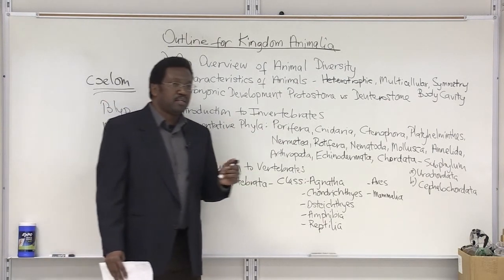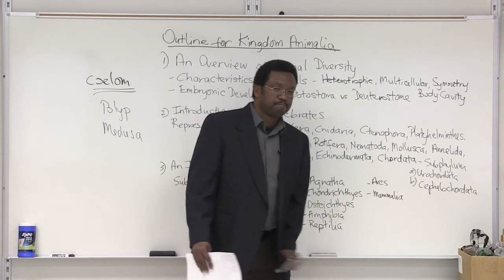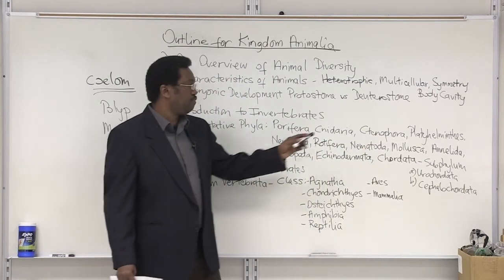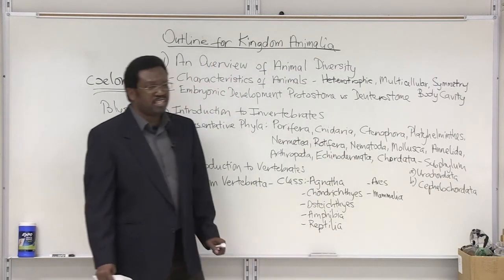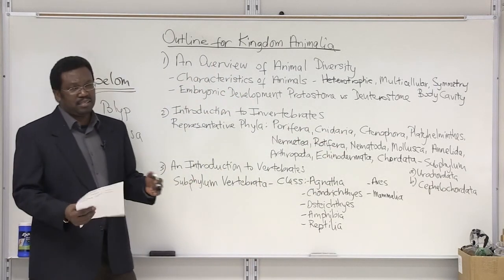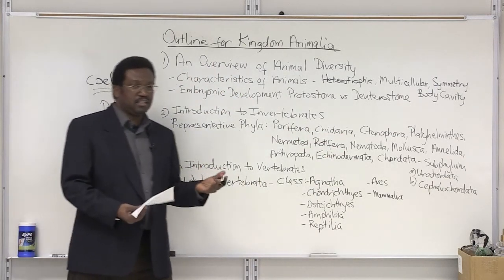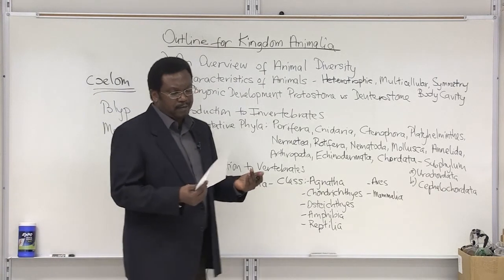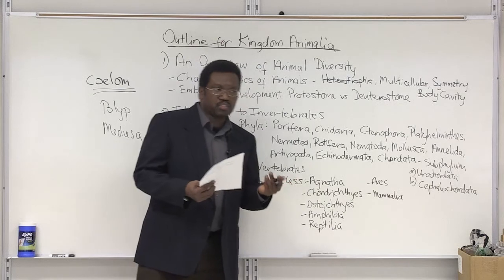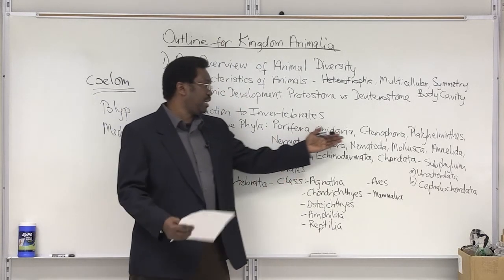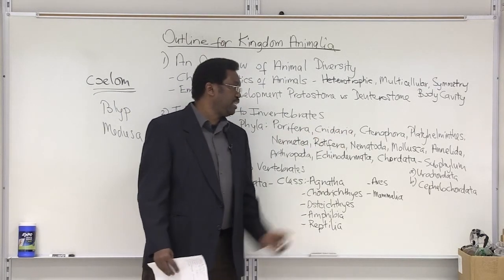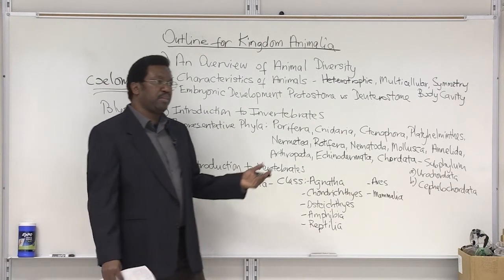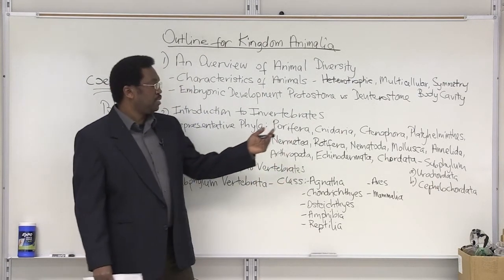Then we have another small group, the Ctenophora — pronounced ctenophora. The comb jellies and sea walnuts are examples. They're similar looking to the cnidarians, a very small group, living in the ocean and resembling cnidarians with a different form to their bodies.